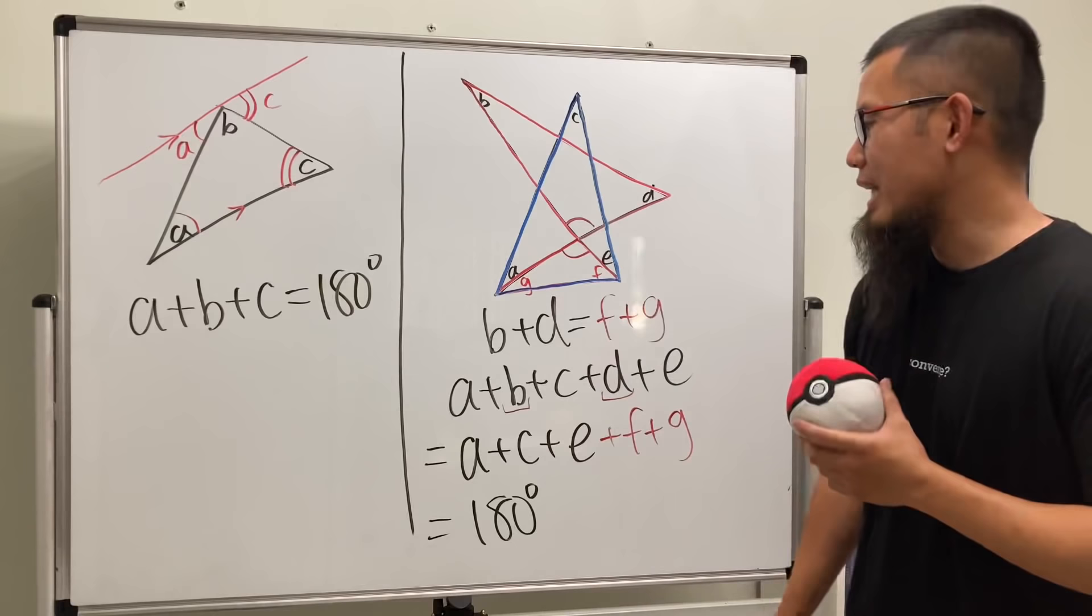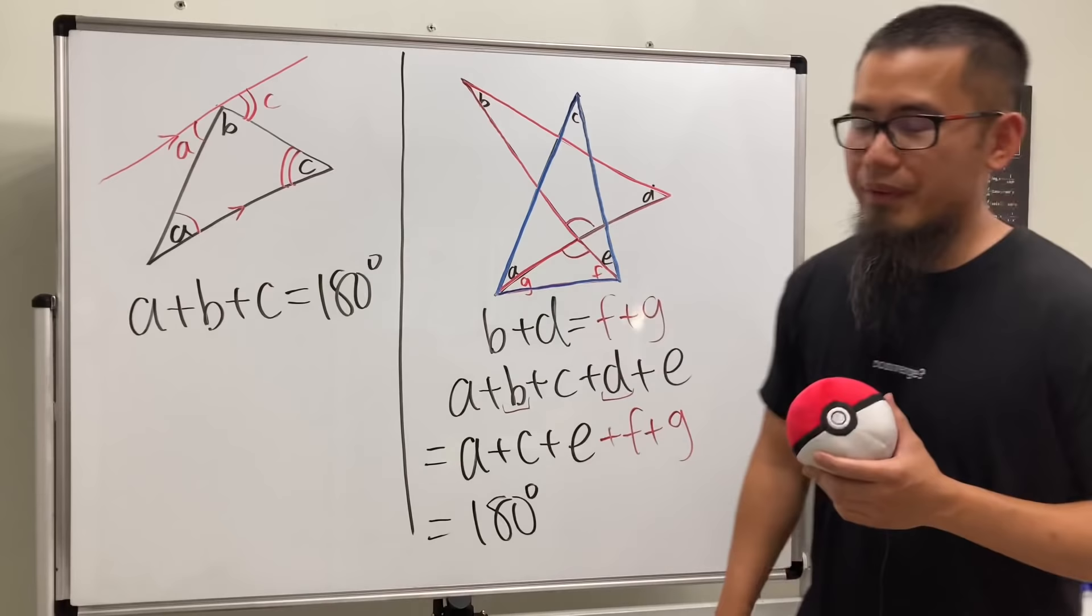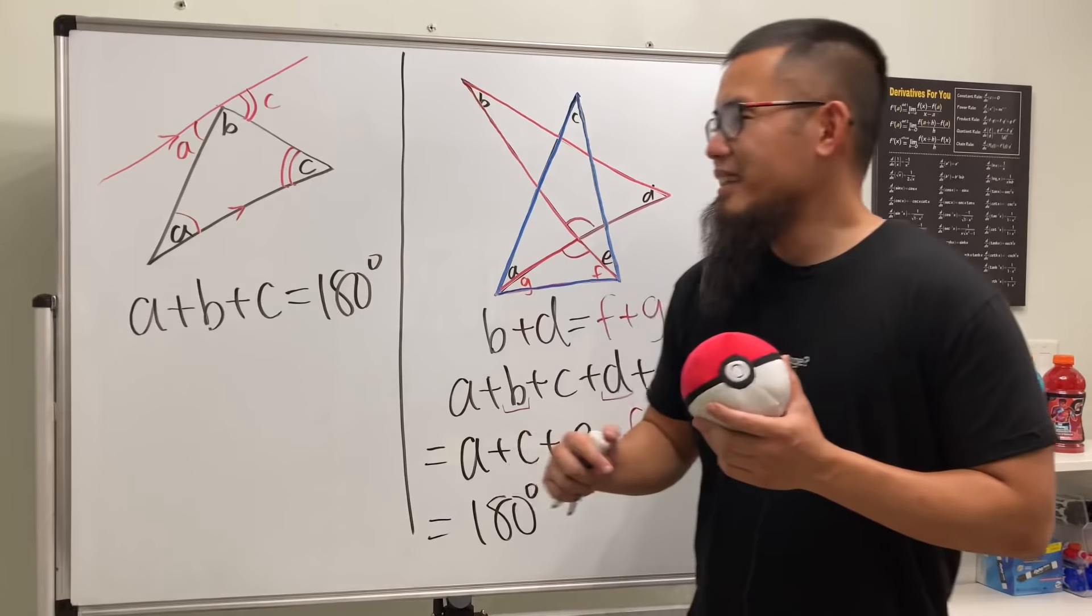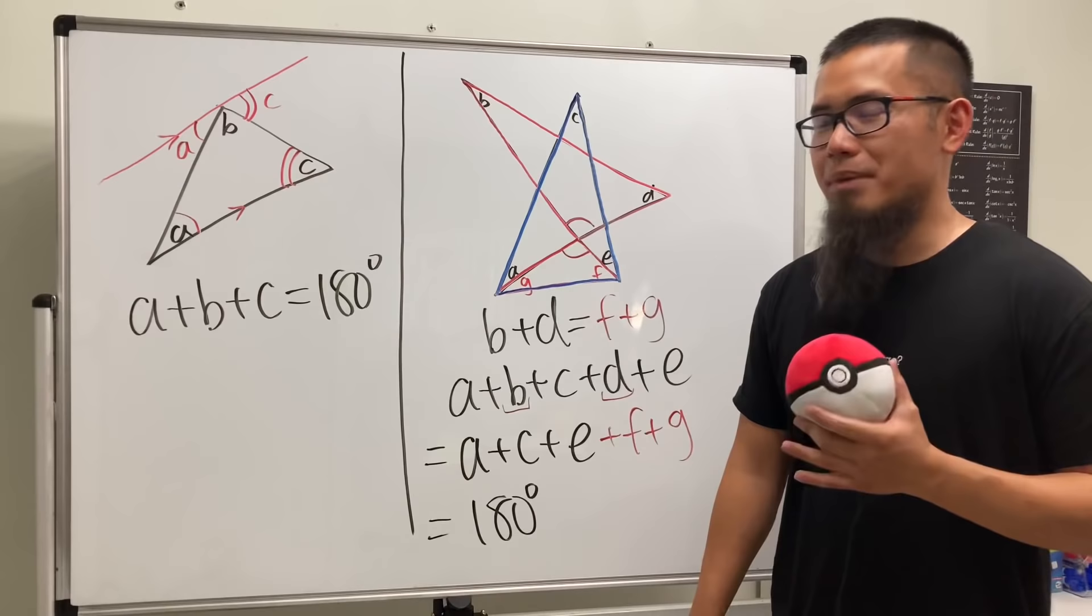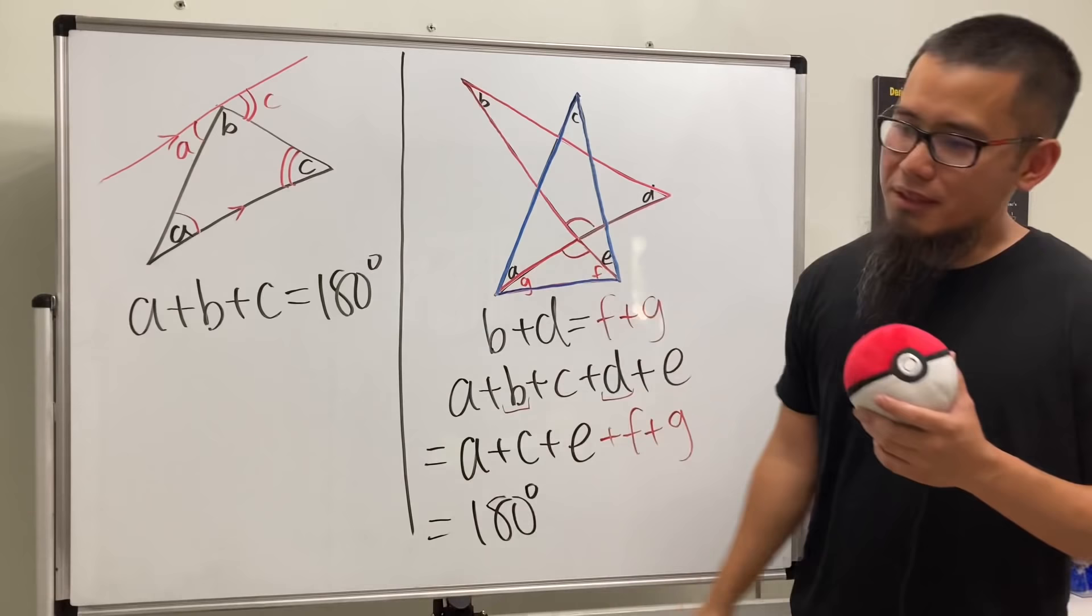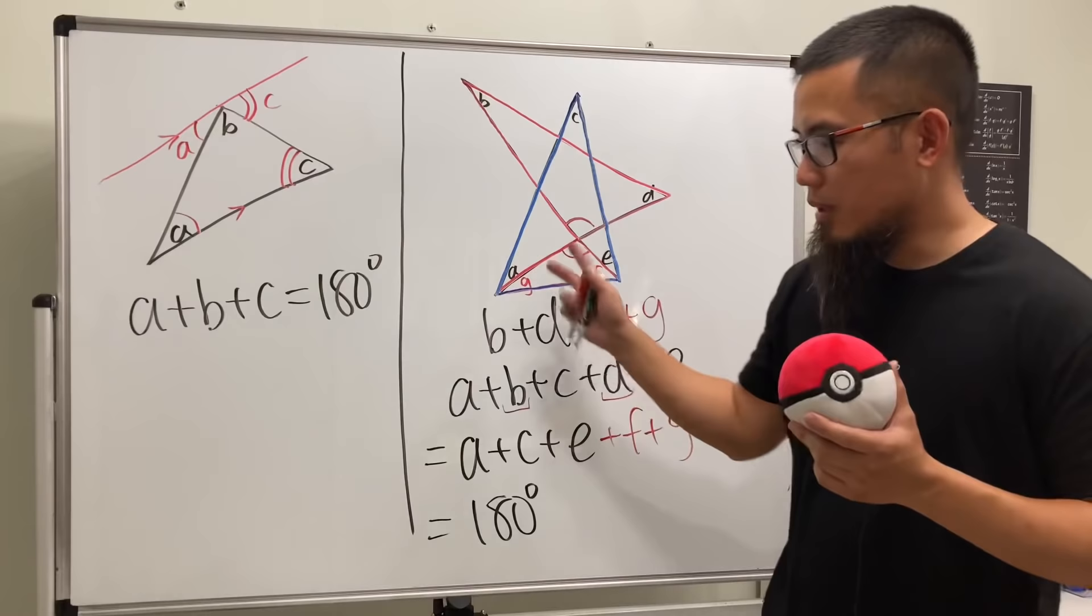But again the question is, how do we know to connect the vertices right here and then consider these two angles? I think geometry requires a lot of experience and you might not see a lot of geometry videos on my channel because I personally do not have that much experience. I have to be honest with you guys.